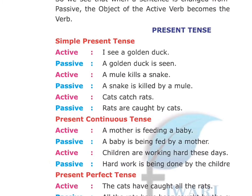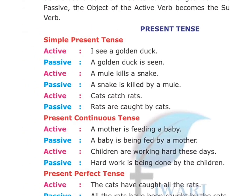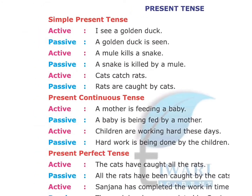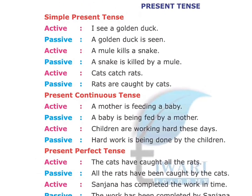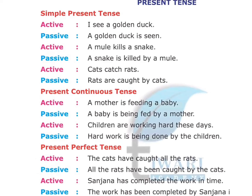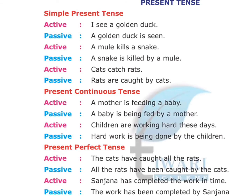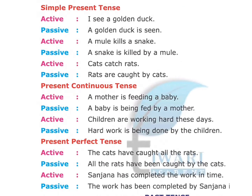Simple present tense examples. Active: 'I see a golden duck.' Passive: 'A golden duck is seen.' In passive voice, we use is/am/are according to the subject, followed by the verb in third form. Active: 'A mule kills a snake.' Passive: 'A snake is killed by a mule.' Active: 'Cats catch rats.' Passive: 'Rats are caught by cats.'